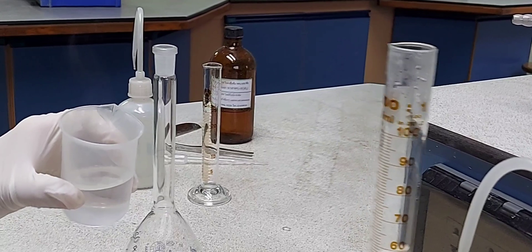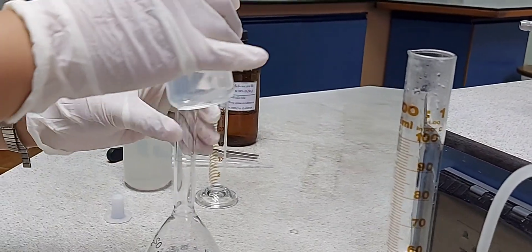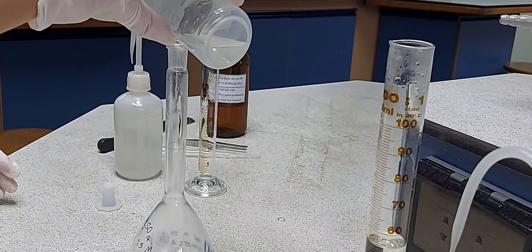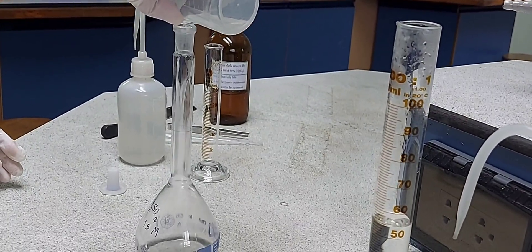So you can see that the 100 ml diluted acid is getting added to the 250 ml graduated flask.